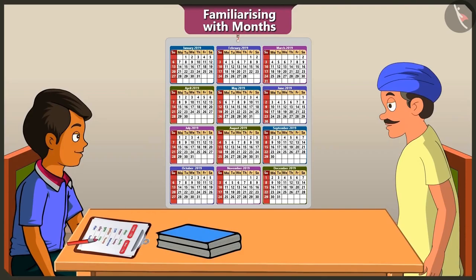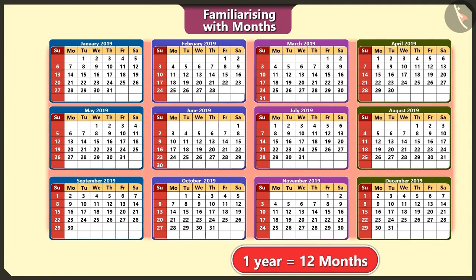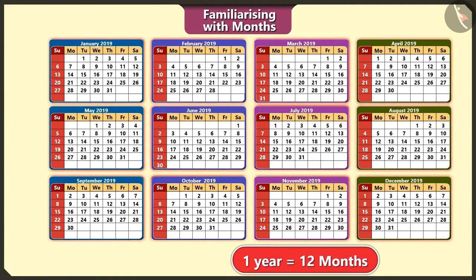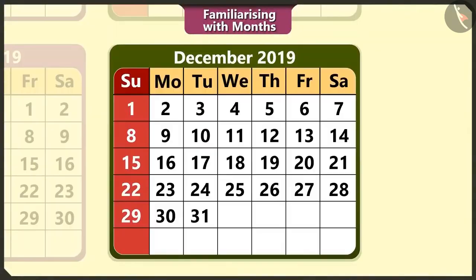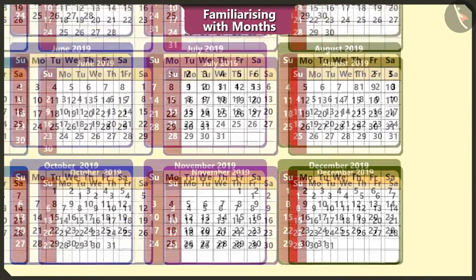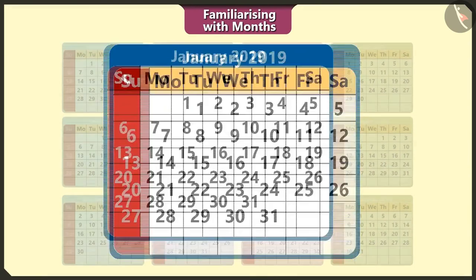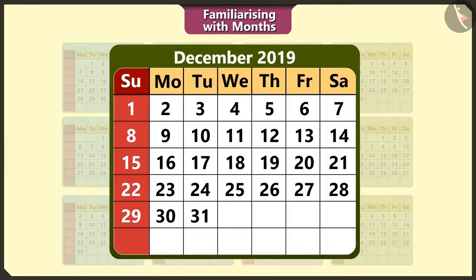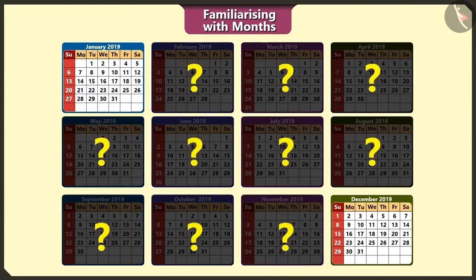Yes, Uncle, I know it. Similarly, there are 12 months in a year. The first day of the year always starts with 1st of January and the last day is the 31st of December. The first month is January and the last month is December. What are the months between these two months?